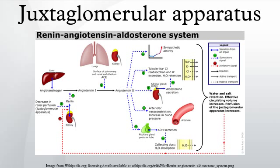Juxtaglomerular cells are specialized smooth muscle cells of glomerular arterioles. They produce and secrete renin.